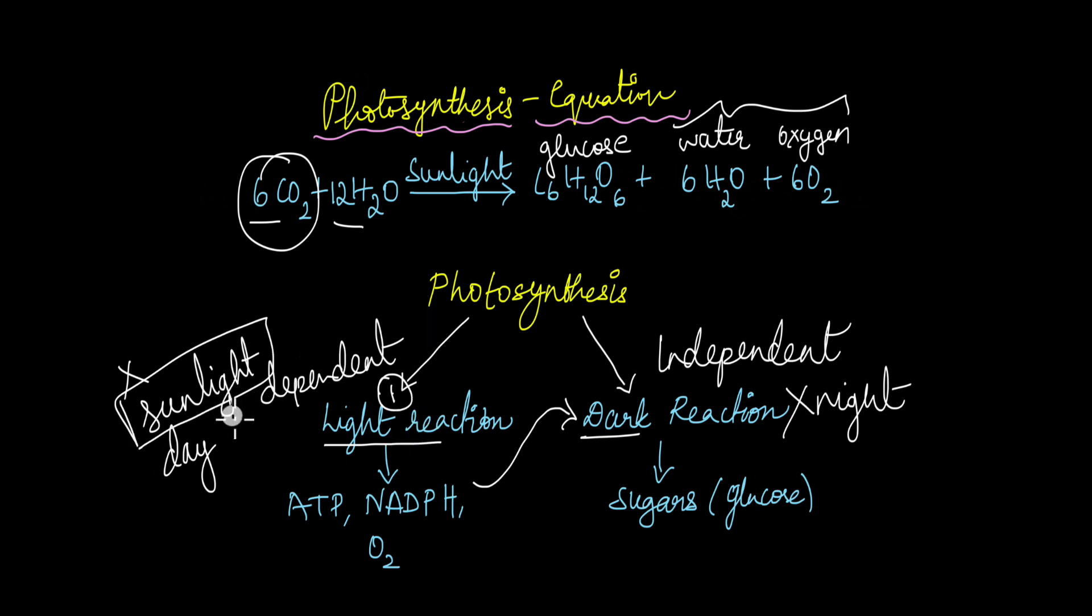It is just that for light reaction it cannot take place without sunlight, but dark reaction can take place without sunlight for a small period of time. Now what are these products of the light reaction that go on to fuel this dark reaction? They are ATP, which is adenosine triphosphate or the energy currency of all living organisms, and NADPH.